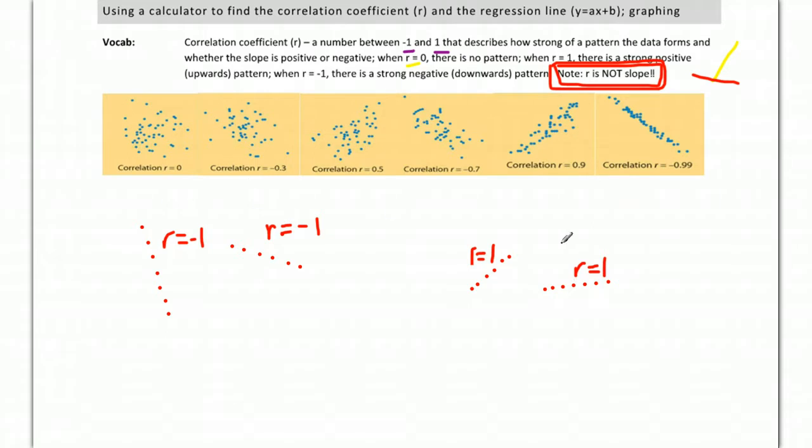To get a sense of what different values look like besides the 1 and negative 1, here's an example when r equals 0. There's no pattern. These points—you could not draw a line—that line or that line or that line would all be equally bad. So when r is 0, there's no pattern.